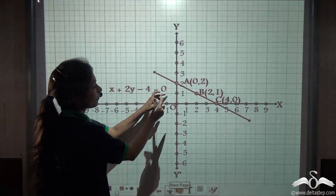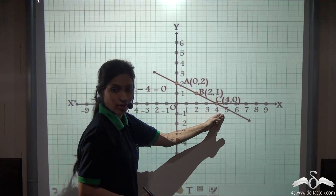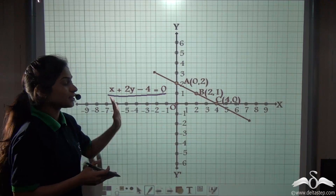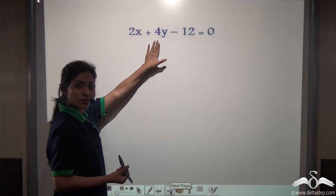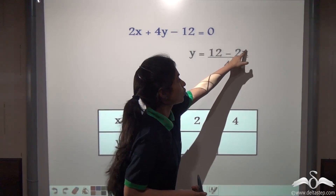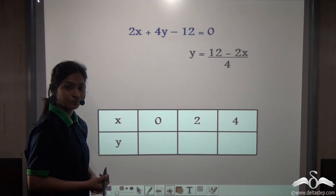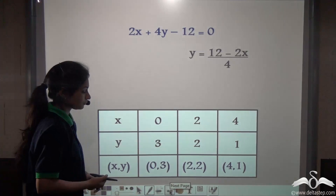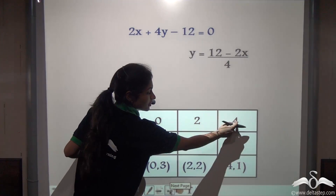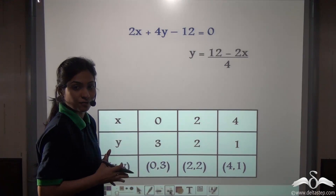When we graph this equation, we see point A at (0, 2), point B at (2, 1), and point C at (4, 0). These three points joined by a straight line give us the graph of x plus 2y minus 4 equals 0. Now for the second equation, we again make y the subject and get y equals (12 minus 2x) by 4. Substituting the same x values: when x is 0, y is 3; when x is 2, y is 2; and when x is 4, y is 1. So the coordinates are (0, 3), (2, 2), and (4, 1).